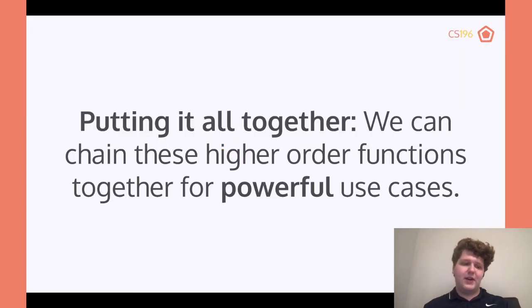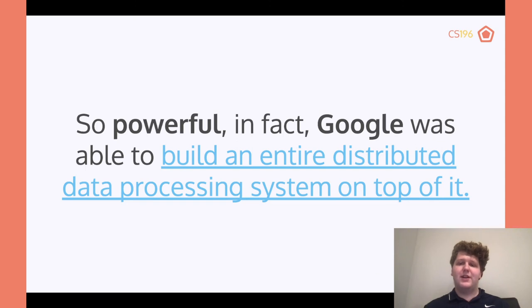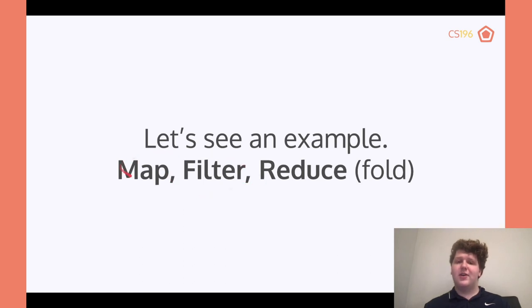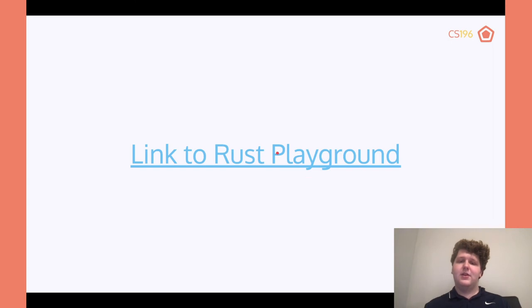Let's put all this together — we've learned a bunch of different types of functions and let's see how we can combine them to make it even more powerful. It's actually so powerful that Google was able to build an entire distributed data processing system using these functions. If you want to click the link once the lecture slides are available, I encourage you to — it's a little dense reading, but it's really cool. In this example, we're going to use map, filter, and fold together. You'll see this a lot especially in JavaScript and other languages with functional components — the map, filter, reduce format.